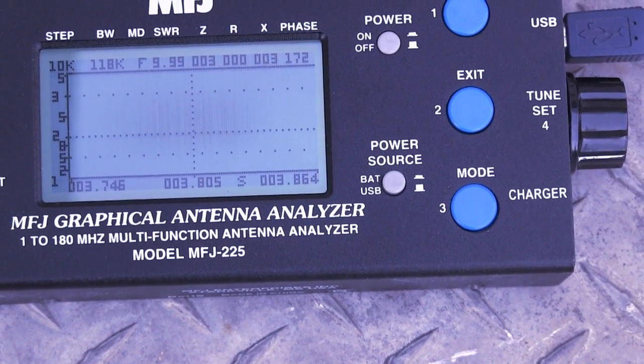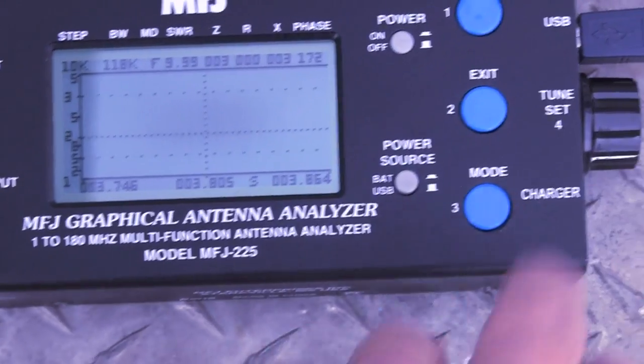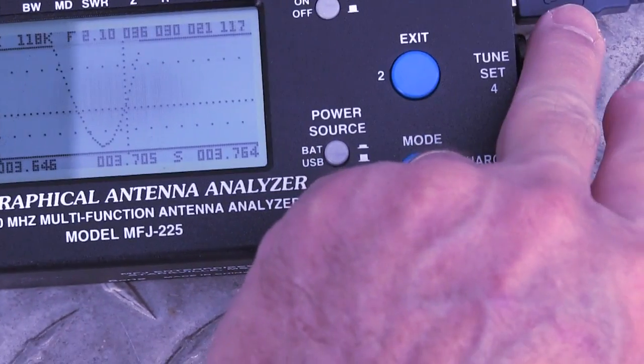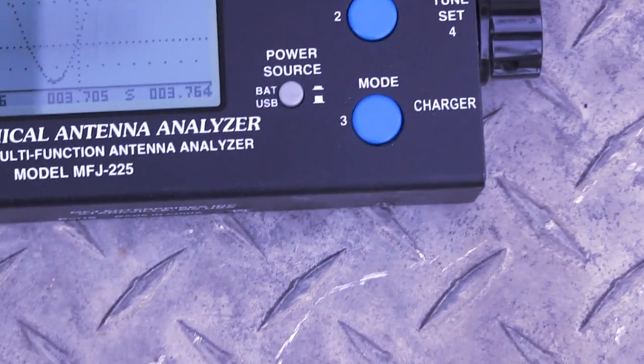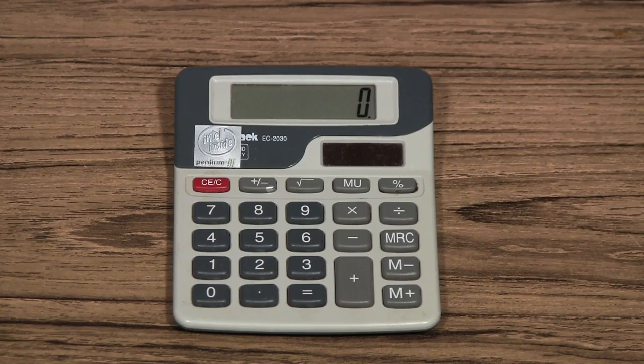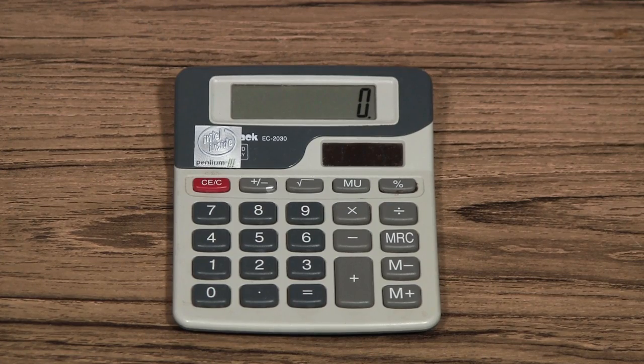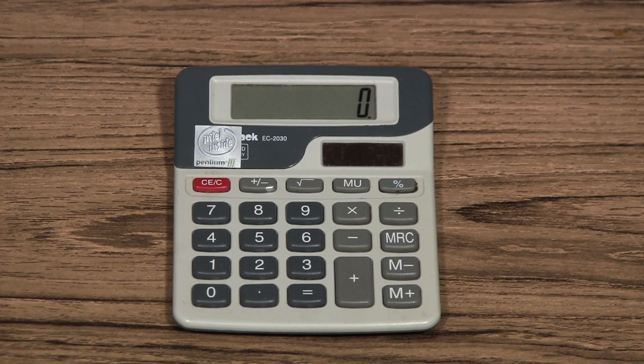So, we're going to have to shorten these elements a little. And that will increase the frequency of the dip in the VSWR. Now, here's a tip that may save you a little time. Get your calculator out or a piece of paper and a pencil and do some ciphering.